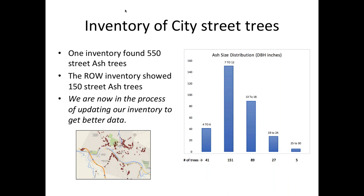In Montpelier, one inventory focused on right-of-way trees found just over 150 trees. A volunteer inventory looking at ash trees with potential to impact the right-of-way found 550 trees. We are now re-gathering that information with trained volunteers to get an updated assessment of those trees' condition and then select which to remove or treat.